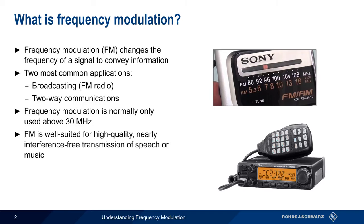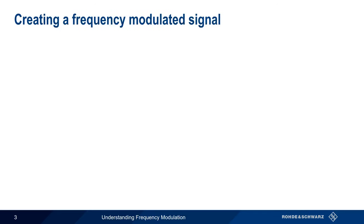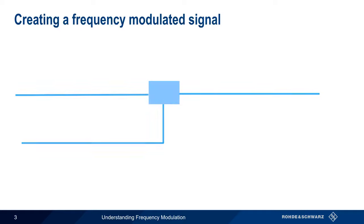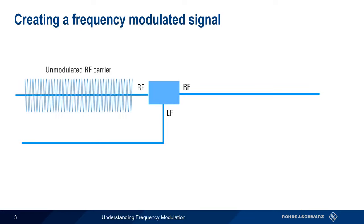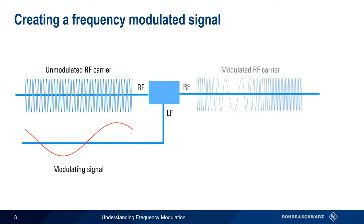One of the major advantages of FM is that it can provide both high-quality and high-immunity to interference, fading, etc. FM signals are created using an FM modulator, the inputs to which are an unmodulated RF carrier and a low-frequency modulating signal. The result is a modulated RF carrier whose frequency continuously increases and decreases based on the amplitude of the modulating signal.